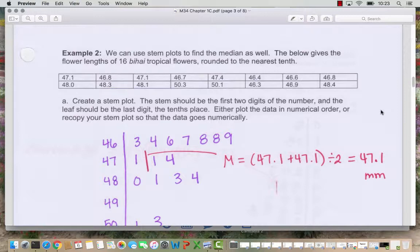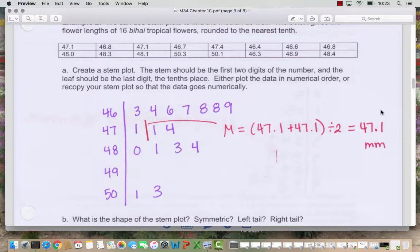So one thing you can do is plot the data in numerical order. The other option is to do a first draft and then recopy your stem plot so that it goes numerically. So since our lowest value is 46.3 you'll see I started the stems at 46 and then this 3 over here tells me that's a data point that has 3 in the tenths place and 46 as the whole number part. And we go all the way up to 50 because our highest value is 50.3. So you can see if I was working down the list 47.1 is here, 46.8 is over here, 47.1 again comes up here. So we can write down the data sorted like this.